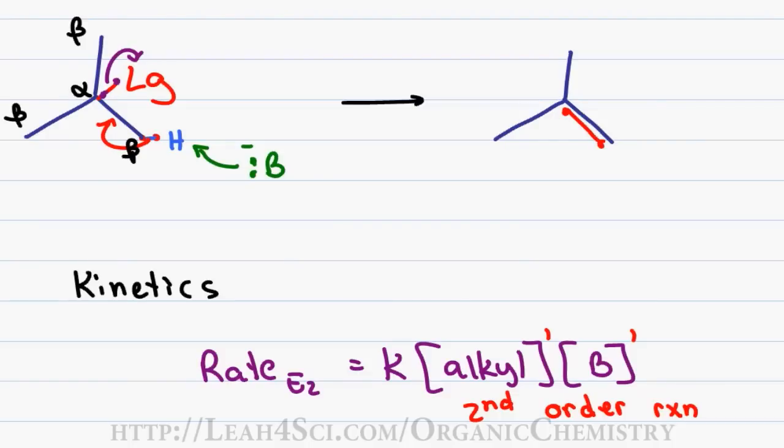This is a concerted mechanism, and so the hydrogen and the leaving group have to be lined up in the same plane. So when the base grabs the hydrogen, the electrons can collapse towards the leaving group and kick it out.